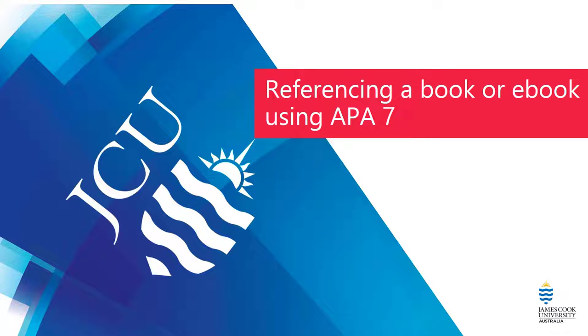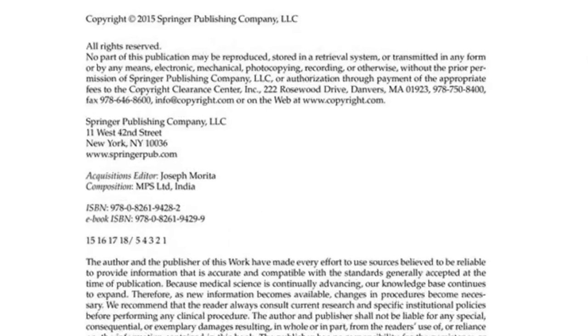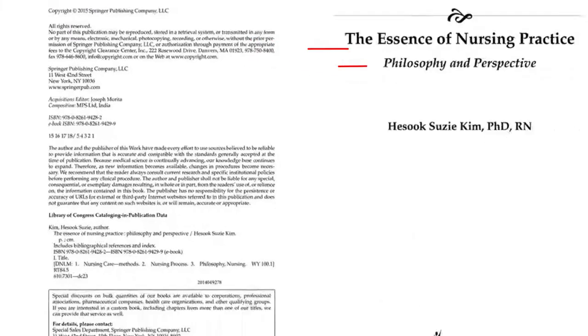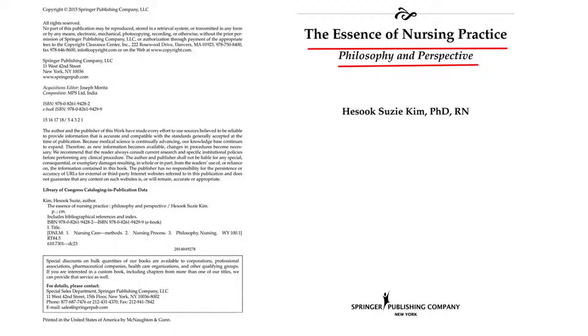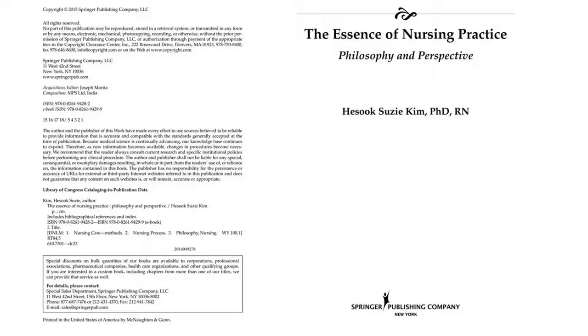Referencing a book or ebook using APA7. To reference a book you will need the following components: the author of the book, the date the book was published, the title of the book in sentence case and in italics, the edition if it's not the first, the name of the publisher, and if it's an electronic book,